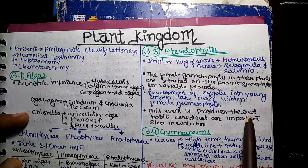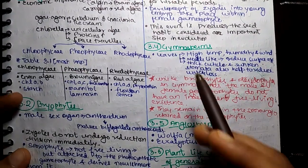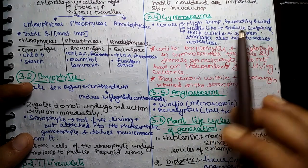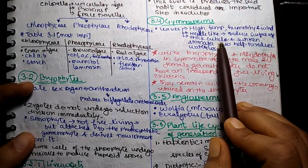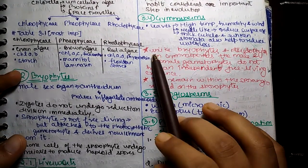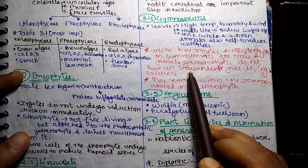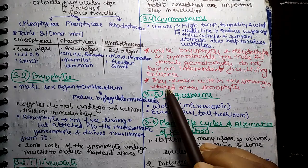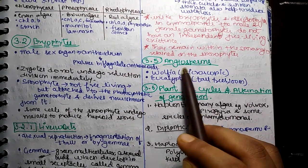Development of the zygote into a young embryo takes place within the female gametophyte. This event is a precursor of seed habit, considered an important step in evolution. Next is Gymnosperms. Gymnosperm leaves are adapted to high temperature, humidity, and wind. Needle-like leaves help reduce surface area. Thick cuticle and sunken stomata also help reduce water loss. Unlike Bryophytes and Pteridophytes, in Gymnosperms the male and female gametophyte do not have an independent free-living existence. They remain within the sporangia retained on the sporophytes.